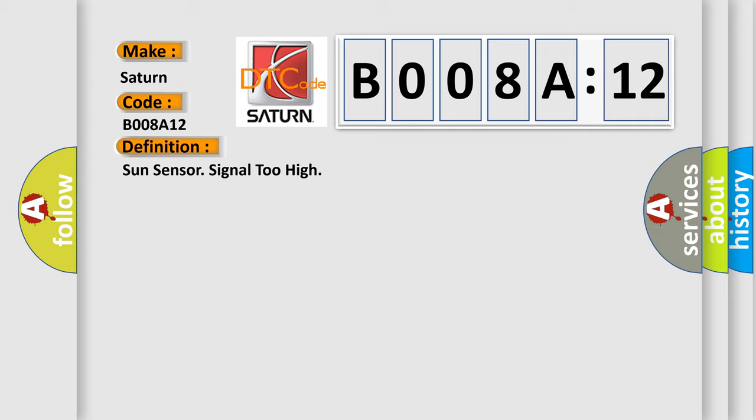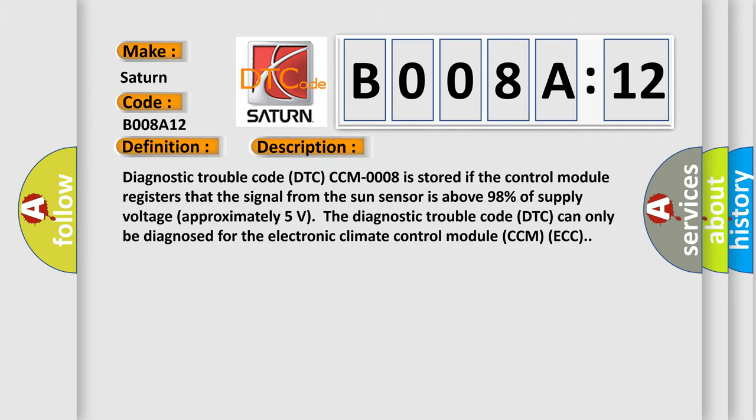And now this is a short description of this DTC code. Diagnostic trouble code DTC CCM-0008 is stored if the control module registers that the signal from the sun sensor is above 98% of supply voltage, approximately five volts. The diagnostic trouble code DTC can only be diagnosed for the electronic climate control module CCM/ECC.